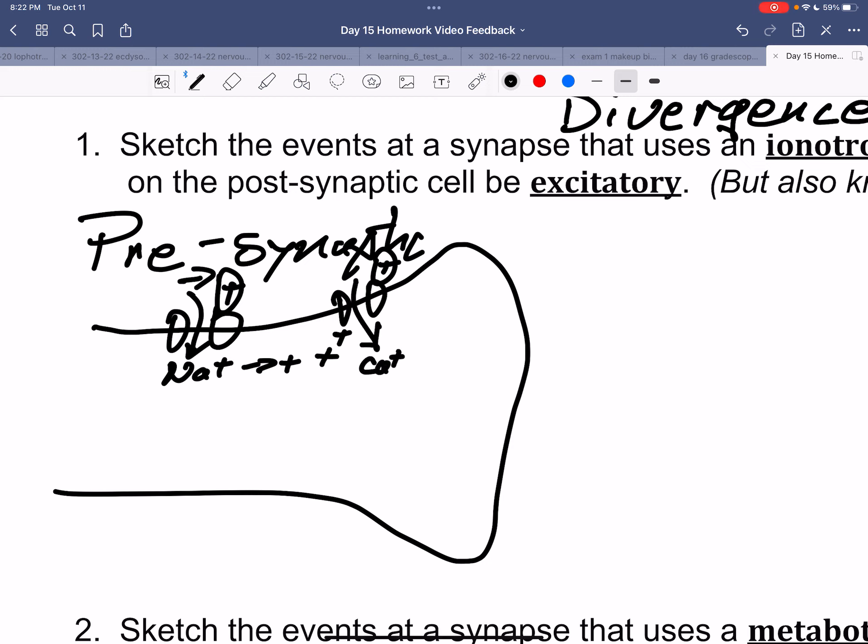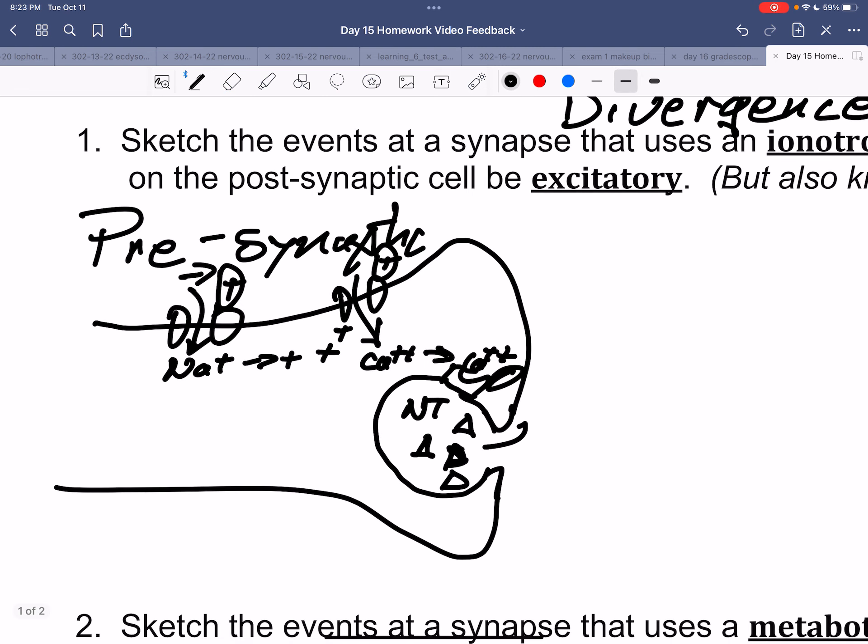Calcium enters. Calcium binds to a calcium-binding protein called synaptotagmin, though we aren't concerned about the name here, which is actually a complex of proteins that are part of the membrane and also attached to the vesicle of neurotransmitter. So here's our neurotransmitter. That causes fusion of the membrane of the neurotransmitter vesicle, and we release neurotransmitter.